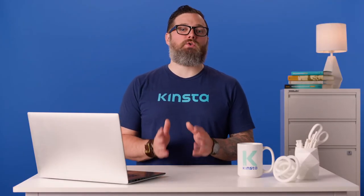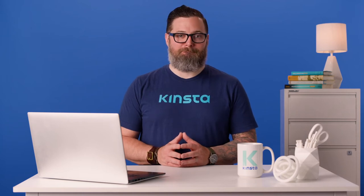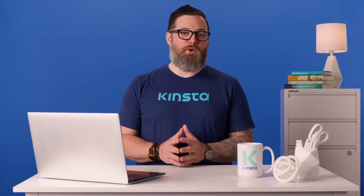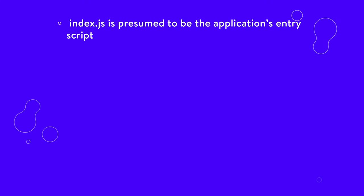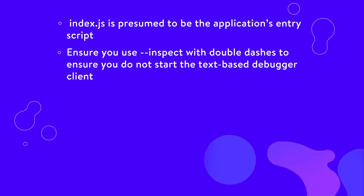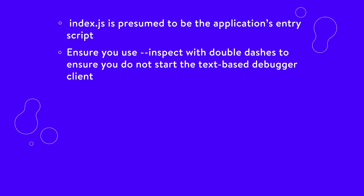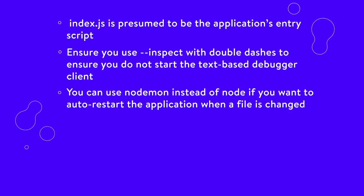The Node.js inspect option starts a WebSocket server that listens on localhost port 9229. It also starts a text-based debugging client, but it's possible to use graphical clients such as the one built into Google Chrome and Chrome-based browsers like Chromium, Edge, Opera, Vivaldi, and Brave. To debug a typical web application, start with the inspect option to enable the V8 debugger's WebSocket server. Remember, index.js is presumed to be the application's entry script. Ensure you use inspect with double dashes to avoid starting the text-based debugger client. You can use nodemon instead of node if you want to auto-restart the application when a file is changed.